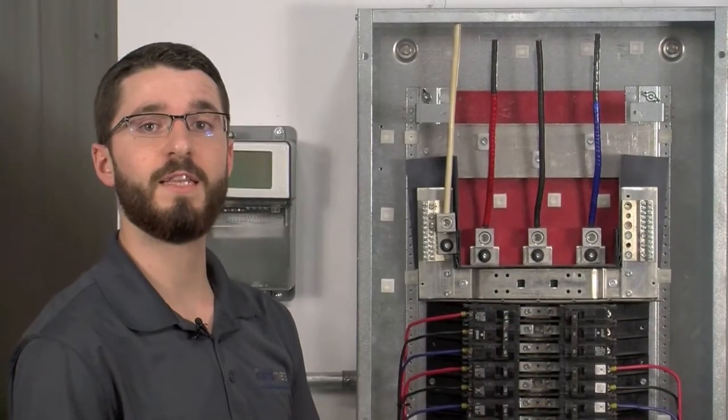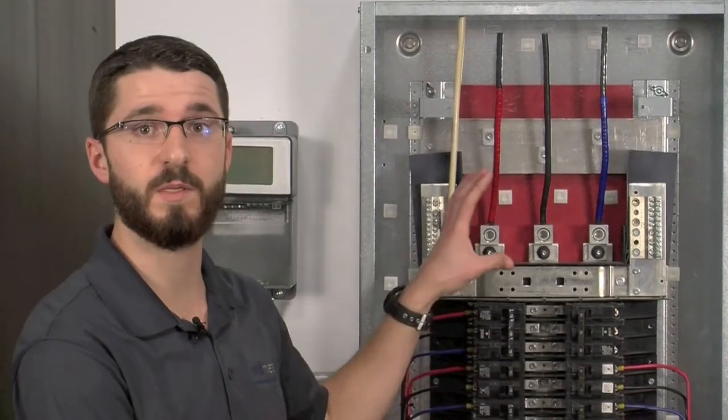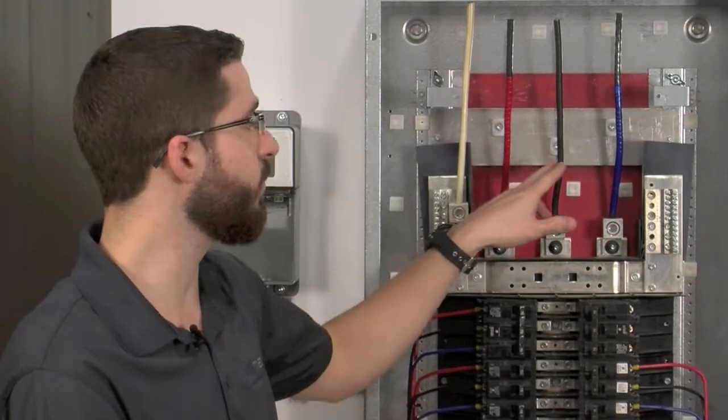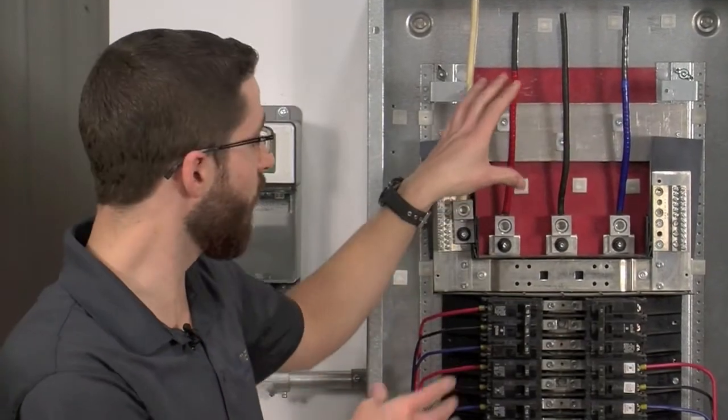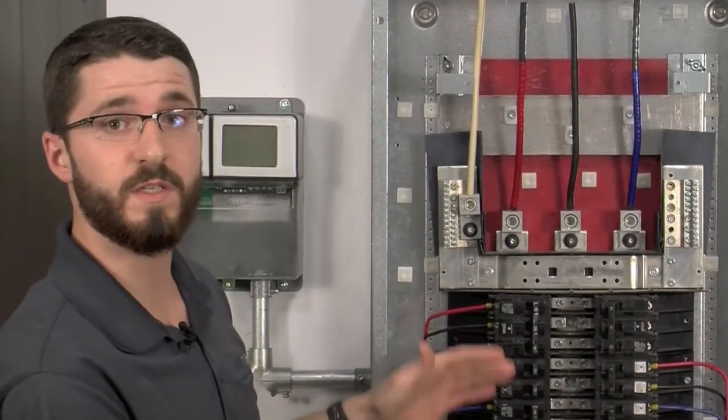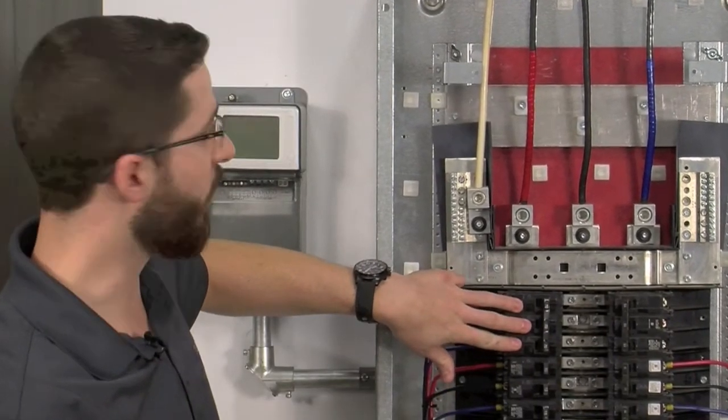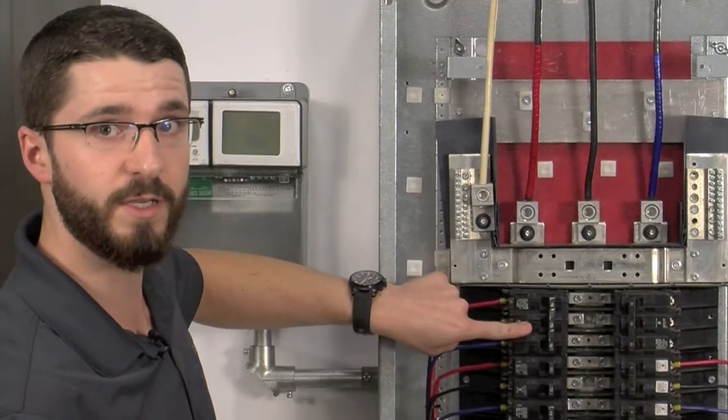So first of all, we're going to locate the breaker, load, or circuit that needs to be metered. In this case, we're going to use CTs 1, 2, and 3 to meter the main load that feeds the breaker panel. We're going to use CTs 4, 5, and 6 to meter a 3-pole breaker located at circuit 1, 3, and 5.